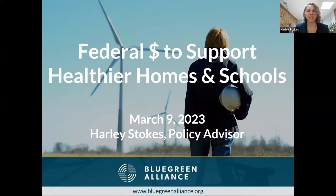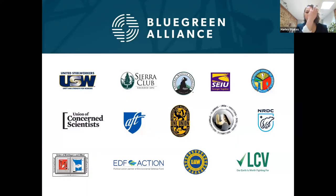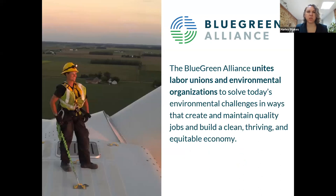Good afternoon everyone, my name is Harley Stokes and I am a federal policy advisor with Blue Green Alliance. My portfolio includes buildings, health, and equity, and we're going to talk about all three today. Blue Green Alliance, or BGA as we call it, is a unique coalition of labor unions and environmental groups. We work on a number of issues at the intersection of environment and the clean energy economy. We believe that we don't have to choose between a good job and a clean environment — we can and must have both. For my portfolio, this means advocating for buildings, including homes and schools, that are energy efficient, climate resilient, and healthy, and that they're built or retrofitted with high road labor standards.